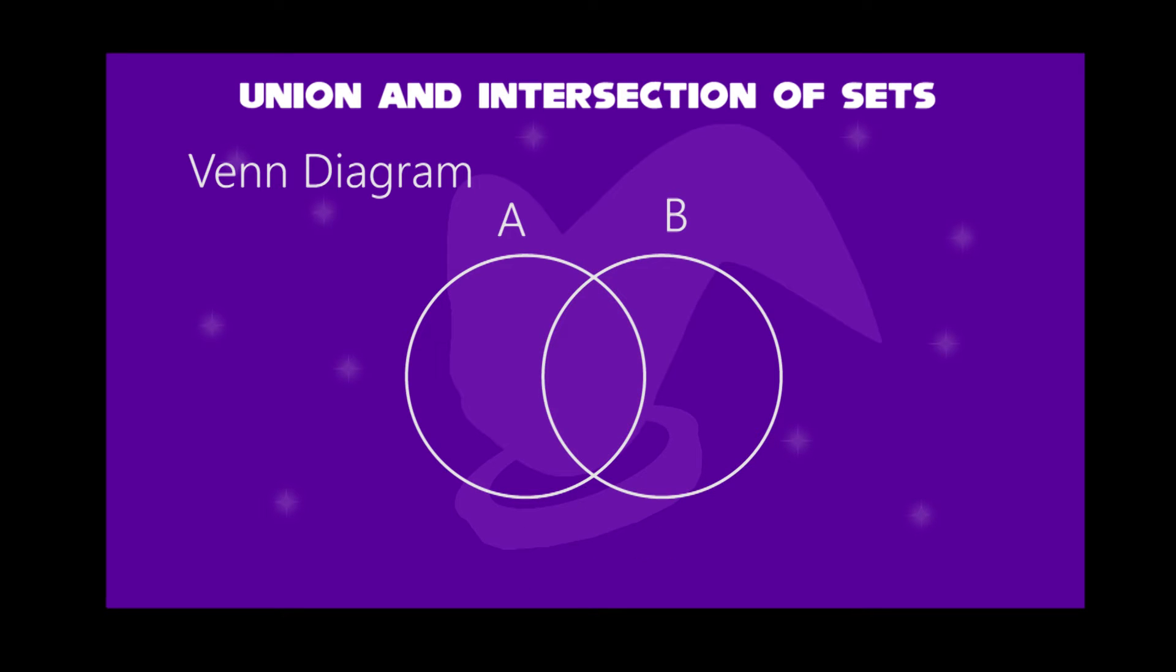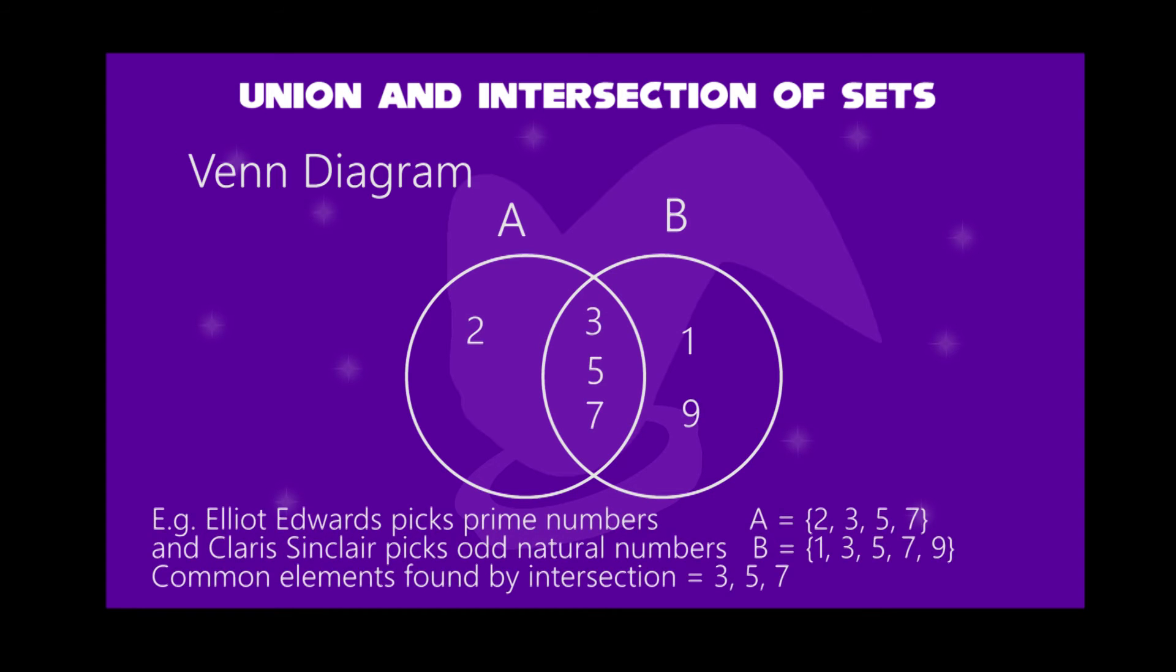Now, let's change the action one more time. We will pick single digits as an example. Elliot Edwards picked prime numbers, and Clarice Sinclair picked odd natural numbers. Set A contains 2, 3, 5, and 7. And set B contains 1, 3, 5, 7, and 9.